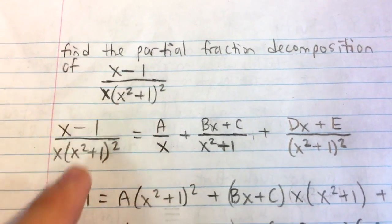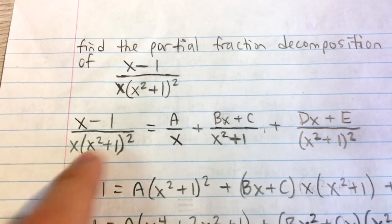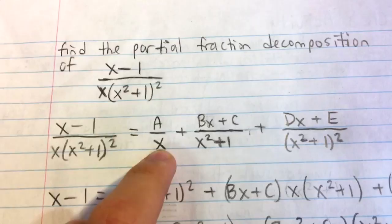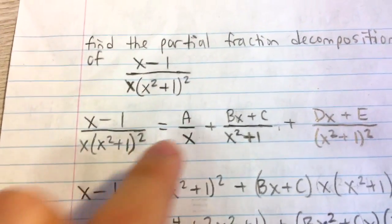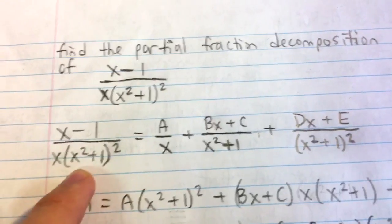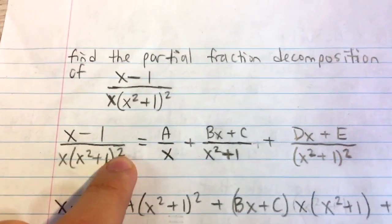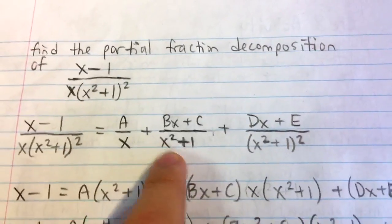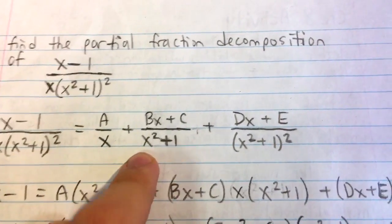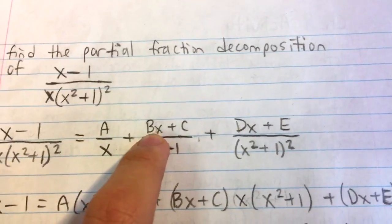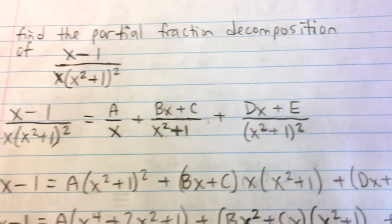Second, we're going to split up the denominator into each of its factors. x is a linear factor, so we have A over x, where A is an unknown constant. For the quadratic factors, we have to use each power of the factor: (x squared plus 1) and (x squared plus 1) squared. For quadratic factors, we use a linear numerator, so we have Bx plus C and Dx plus E.